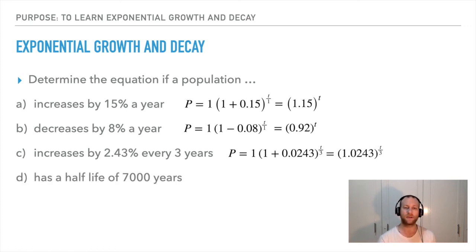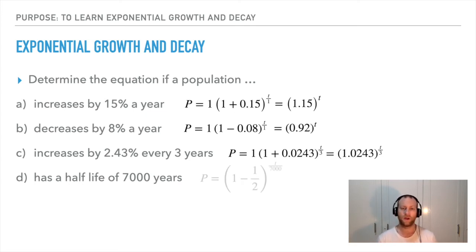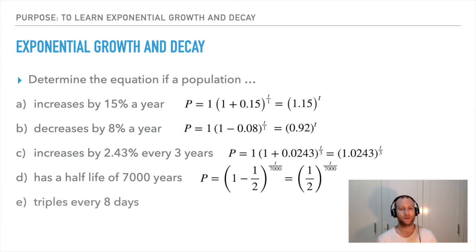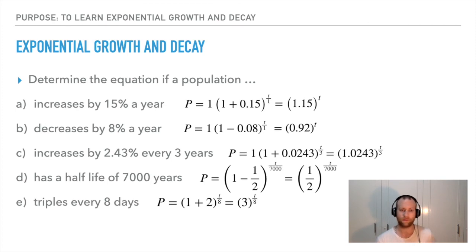For a substance with a half-life of 7,000 years: a half-life means a 50 percent decrease, so 1 minus 0.5 equals 0.5 as the base, and n equals 7,000 years. For something that triples every eight days: n is eight, and the base is three. Shortcut: tripling gives base three, doubling gives base two, half-life gives base one-half.